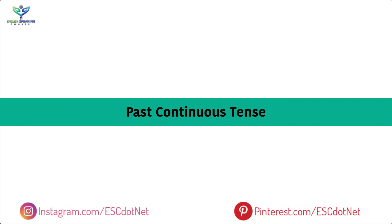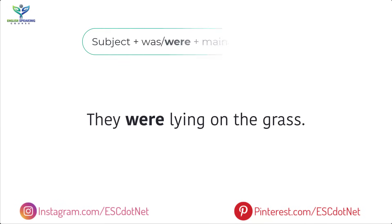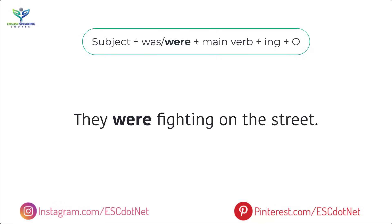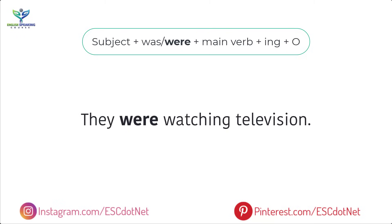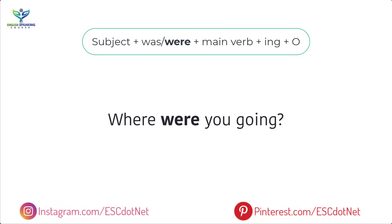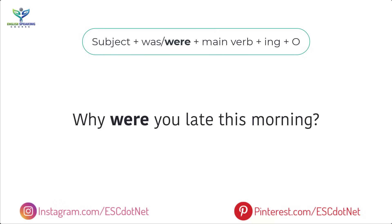Past continuous tense with 'were': They were lying on the grass. They were fighting on the street. You were talking in your sleep last night. They were watching television. Where were you going? Why were you late this morning?